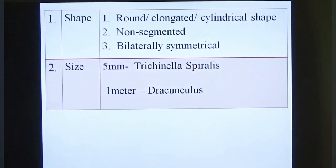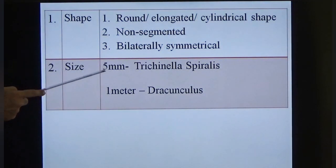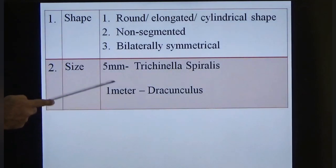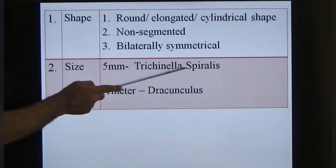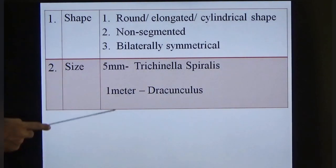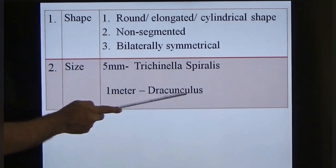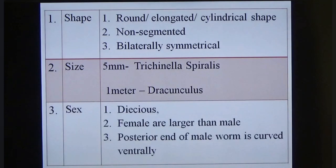The second characteristic is size. The size of nematodes ranges from 5 mm to 1 meter. The smallest nematode is Trichinella spiralis at 5 mm, and the longest nematode is Dracunculus medinensis at 1 meter.